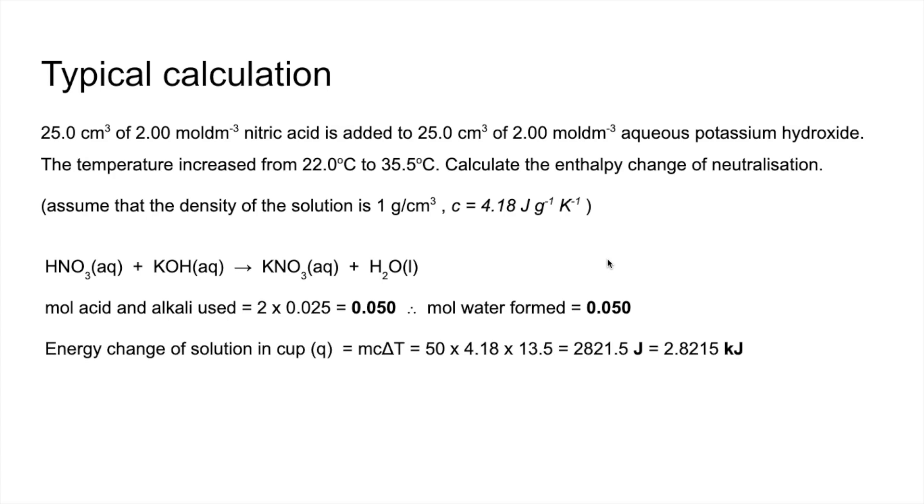We then work out the energy change of the solution in the cup, so that's the mcΔT bit. 50 for the combined mass of the solutions - we've got two lots of 25 cm cubed. Told that the density needs to be the same as water, so that will be 50 grams times the specific heat capacity of the solution times the temperature change. So that gives us that many joules. Remember, it comes out in joules, and then convert to kilojoules because enthalpy change is normally expressed in kilojoules per mole.